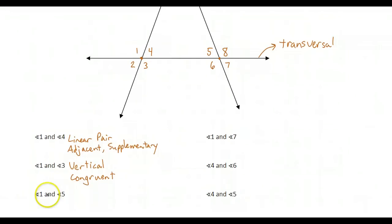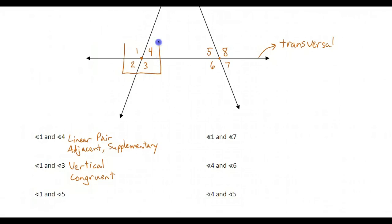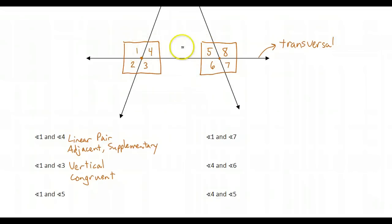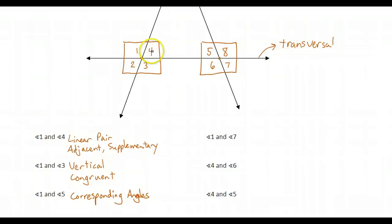Let's look at one and five. They're on different lines but on the same transversal. If I draw a box around each group of four angles, angle one is in the upper left corner and angle five is also in the upper left corner — they're both in matching positions. They are corresponding angles. Every angle has a corresponding angle: four and eight, two and six, and three and seven.